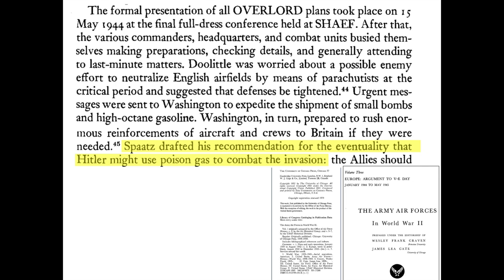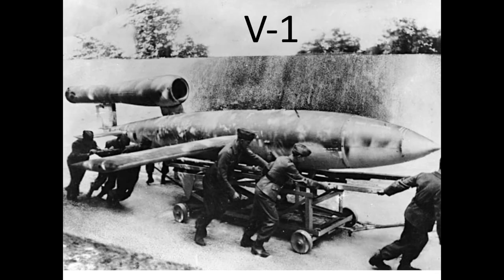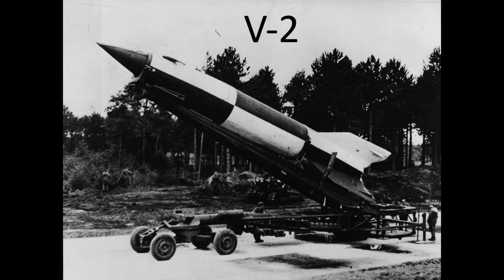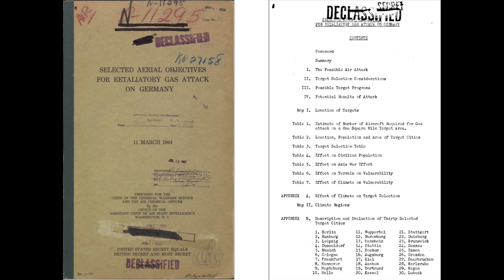The British were concerned that Germany would crash their V-1 flying bombs and/or their V-2 rockets containing poison gas into English cities. The U.S. reprisal plan is outlined in this declassified March 1944, 123-page Chief of the Air Staff Intelligence document titled 'Selected Aerial Objectives for the Retaliatory Gas Attack on Germany.' The report was issued three months prior to the D-Day invasion.